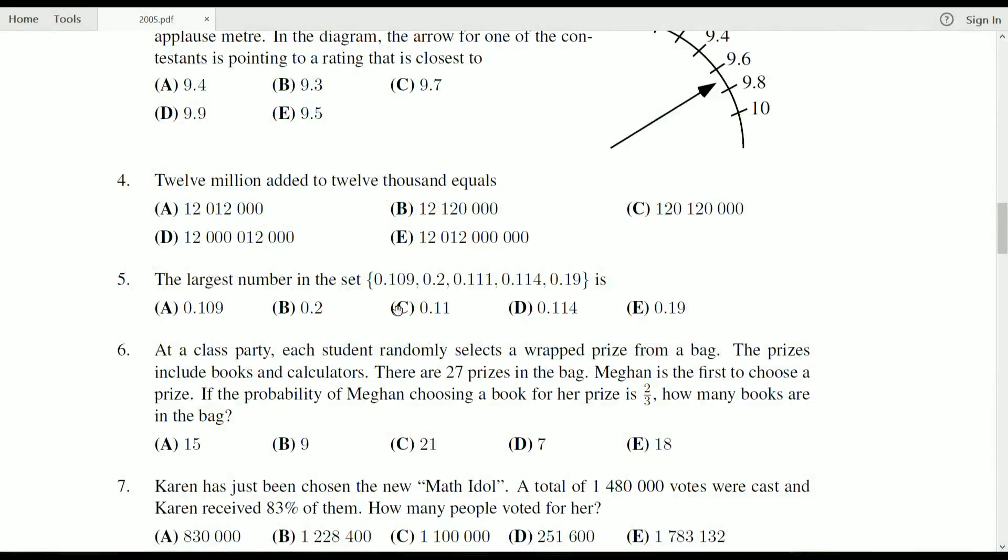The largest number in the set. We've got a set of, count the commas, one, two, three, four—we have five numbers here, five multiple choice answers.